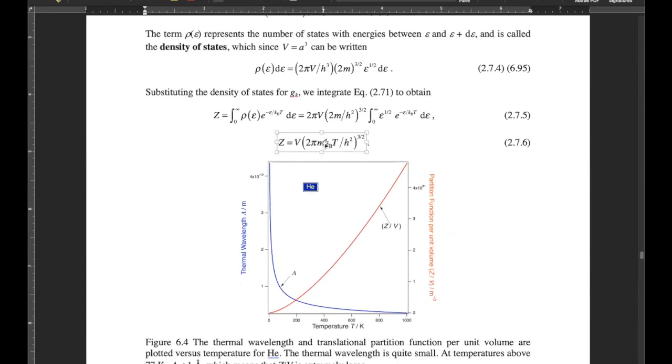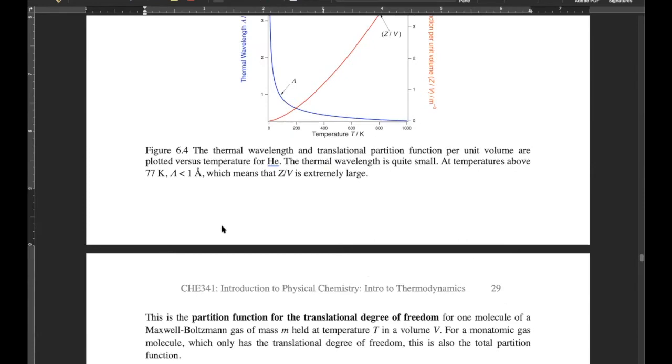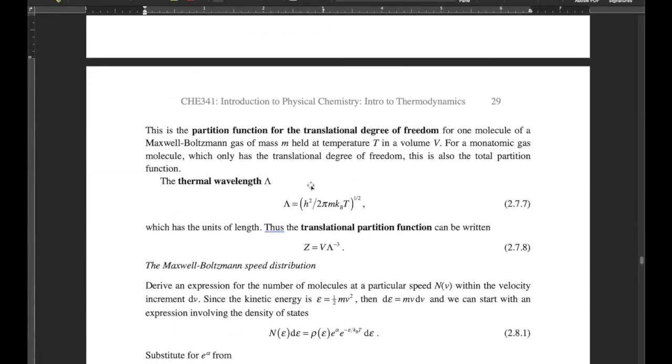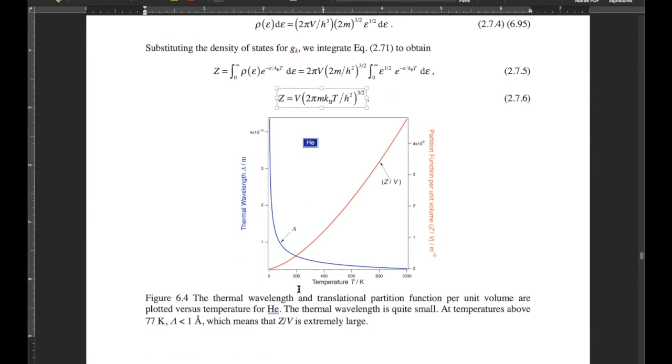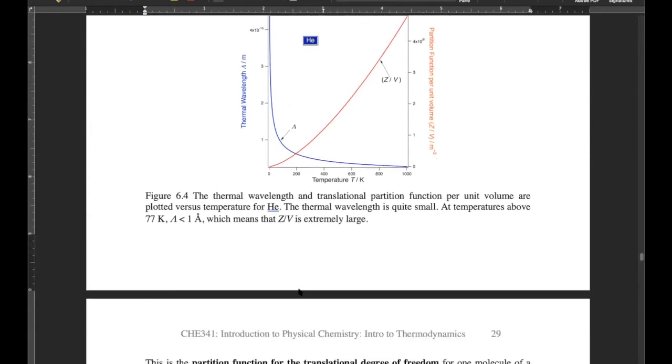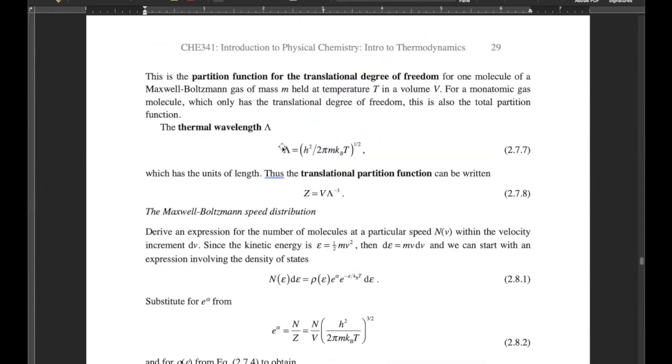That term, if we cube it, has to have units of inverse volume. If we have the non-cubed version, it's in length. Look at that length, the thermal wavelength, 10 to the minus 14 meters. This is why it's related to why translation has gone continuous on us. This thermal wavelength, the box has to be really small to get quantum behavior. Calling that the thermal wavelength, we get a really simple expression for the translational partition function.